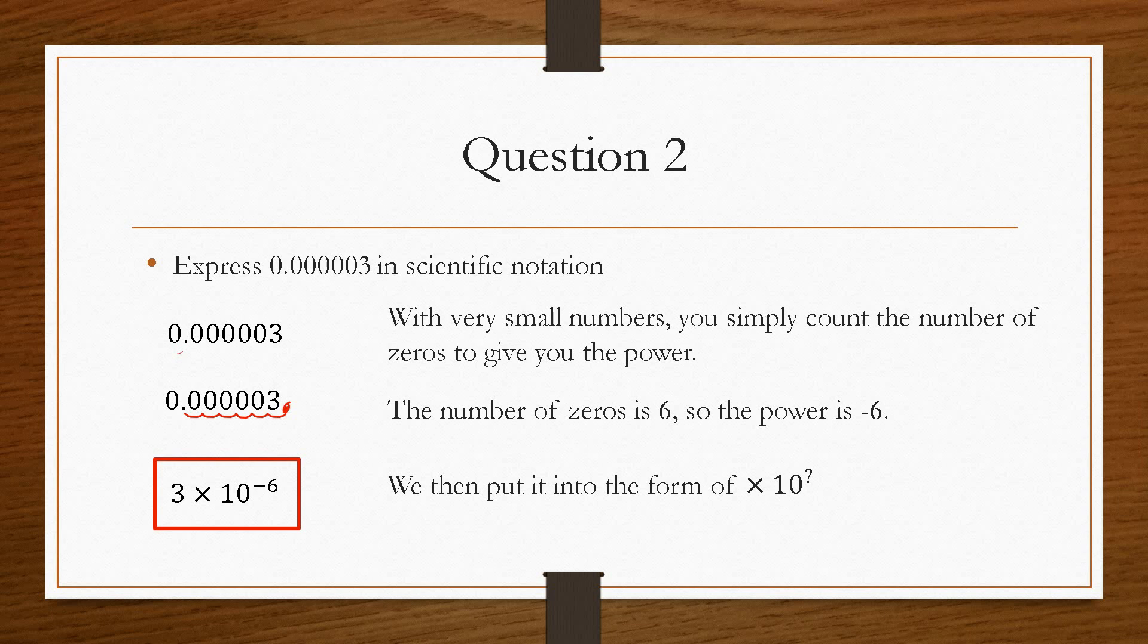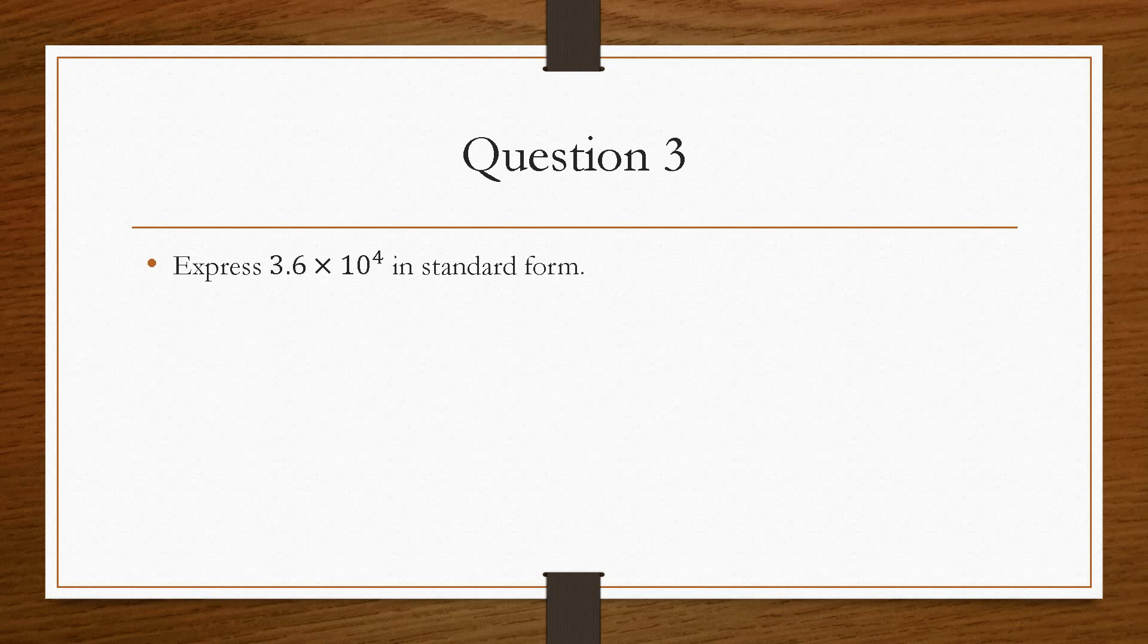And that is as difficult as scientific notation gets. You can do it with extremely large numbers, or you can do it with extremely small numbers. The principle and the process is exactly the same. Now, if we want to go in the opposite direction, say for example, we want to go from scientific notation to standard form, then we just do the reverse of exactly what we did before. So we want to express 3.6 times 10 to the 4 in standard form.